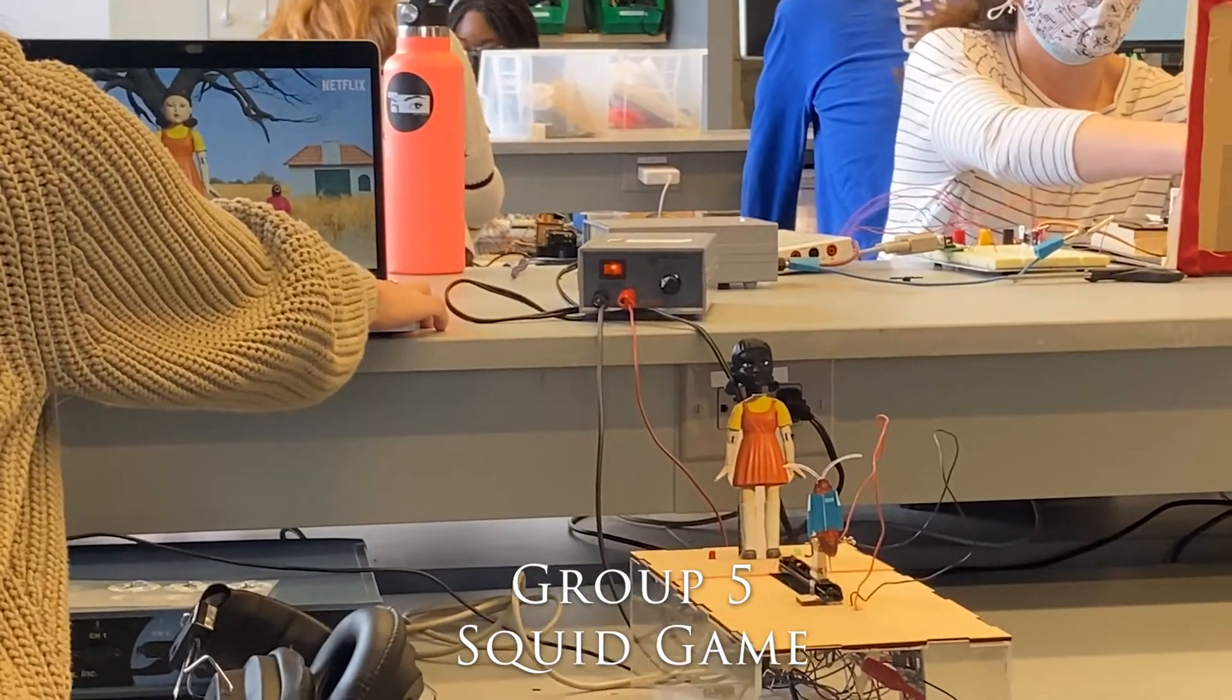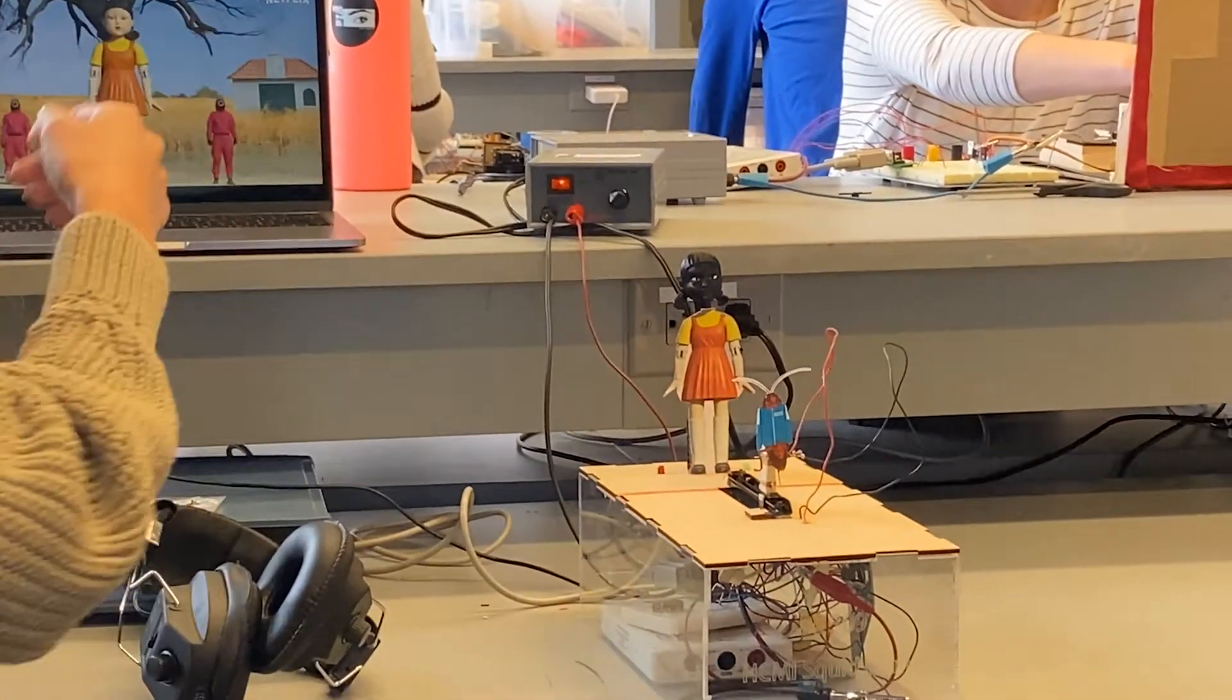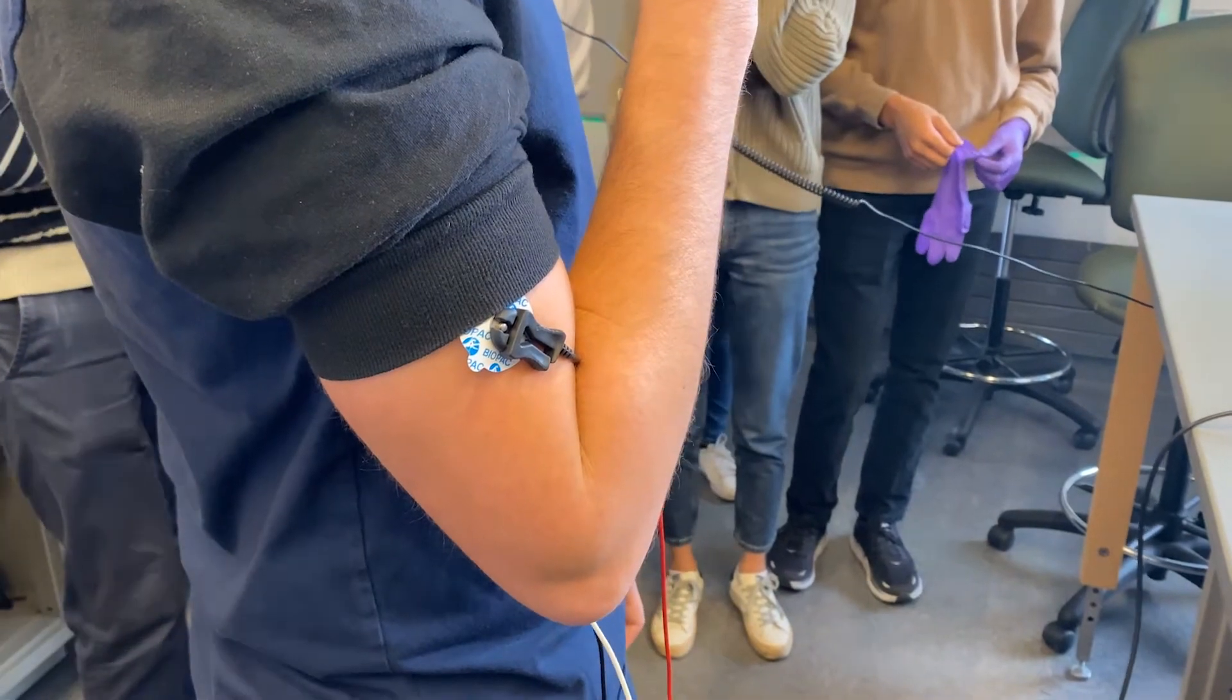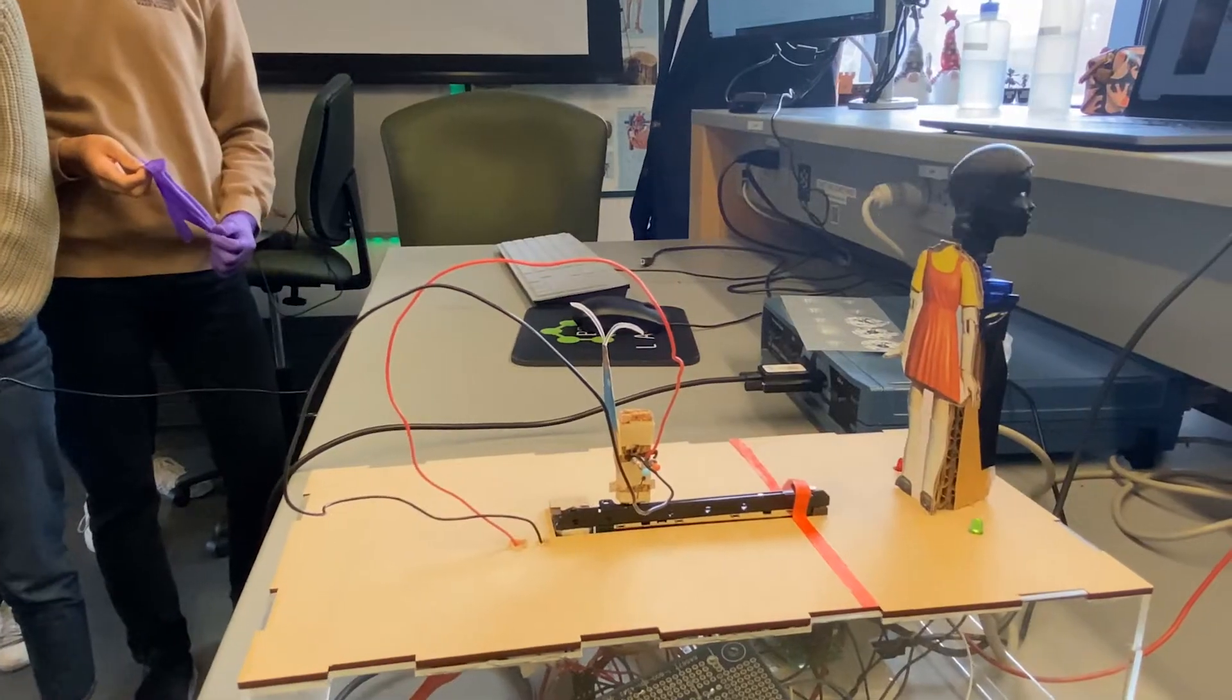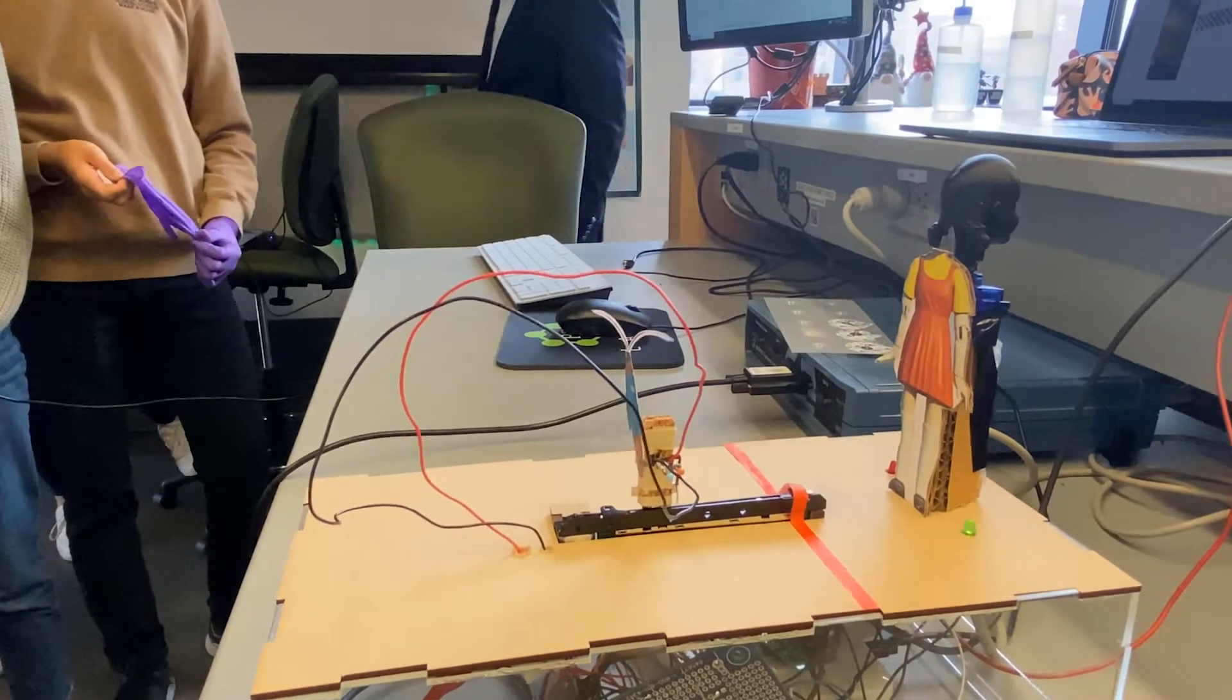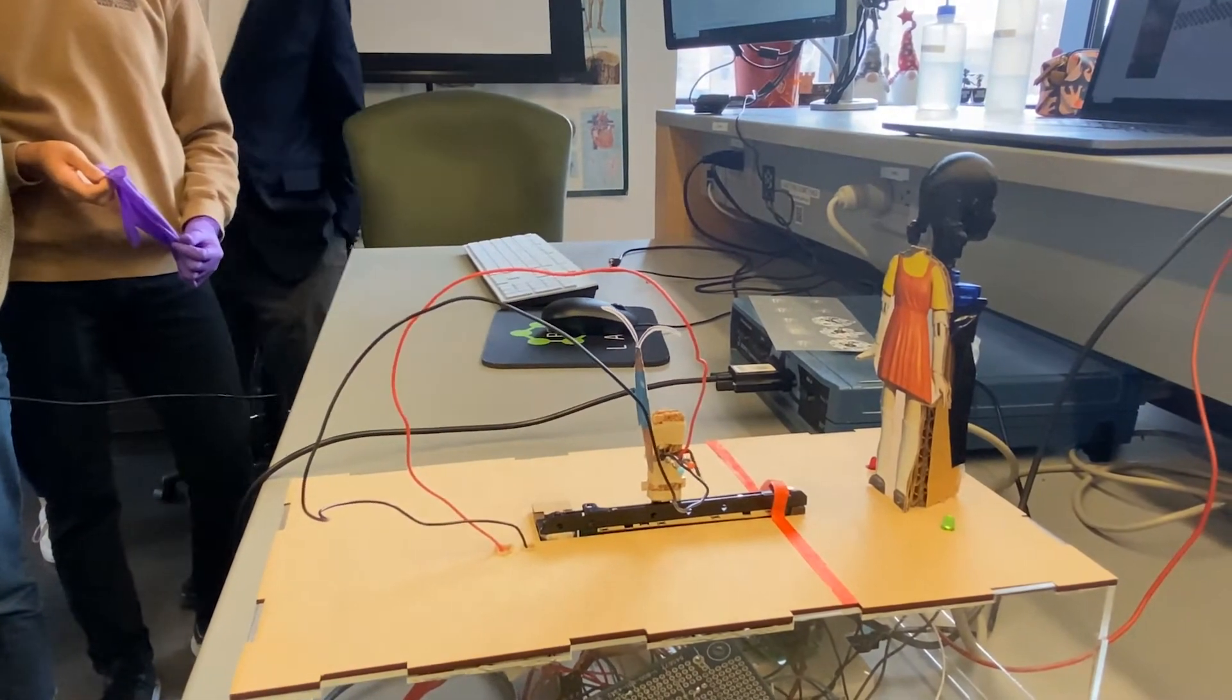Hi everyone, so this is Squid Game. The two inputs to our system are the EMG electrodes connected to Jake's arms and a resistor at the base of the motor. We're concerned with where it is on the track because that dictates whether you're winning or losing.